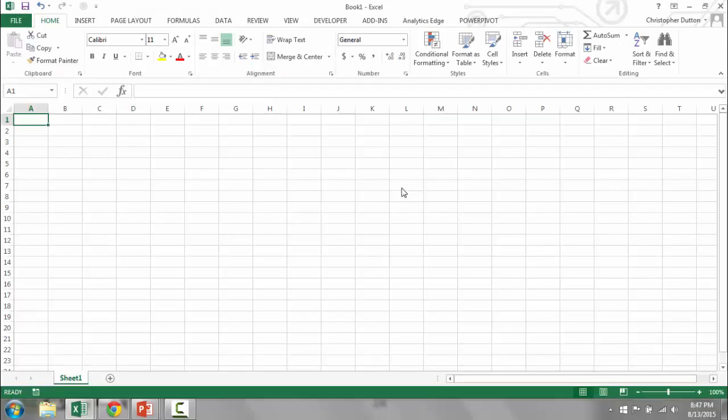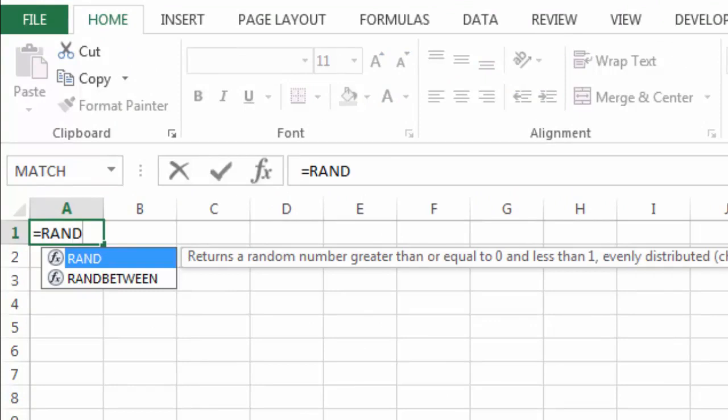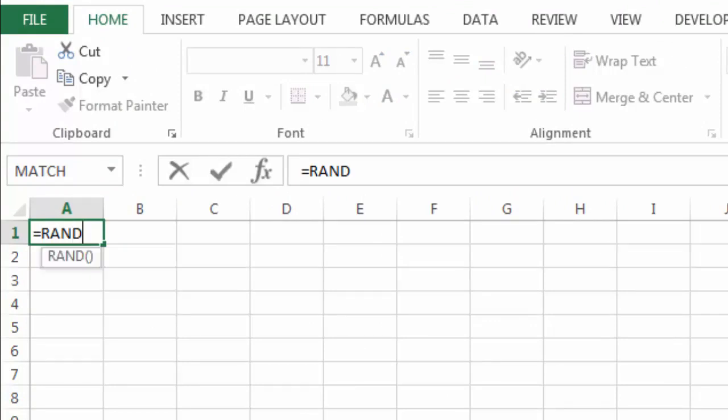I'm going to jump into just a blank Excel workbook to really quickly show you what these look like. In cell A1, I'm going to do a RAND function. So just RAND, open, close parentheses, enter.